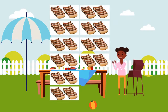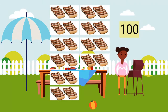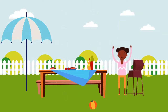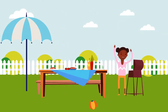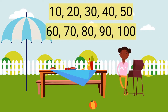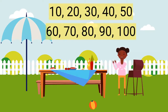We have one hundred hot dogs to cook for the barbecue. It was much easier to count the hot dogs by tens than by ones or fives. Did you see a pattern when counting by tens? Yes! Skip counting by tens is a pattern that's like counting by ones. We say the same numbers, but add a zero.